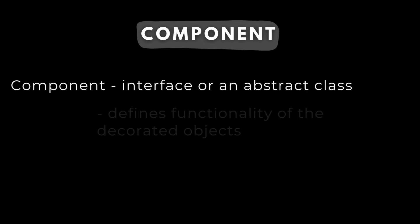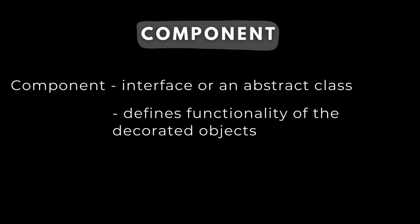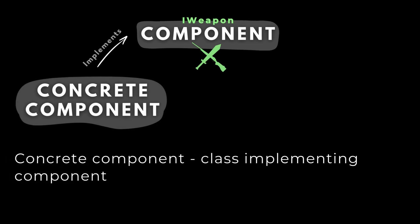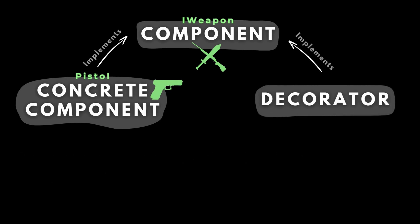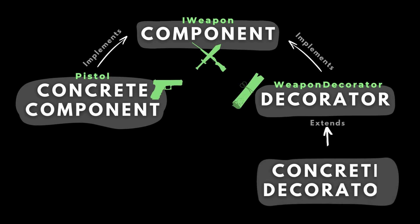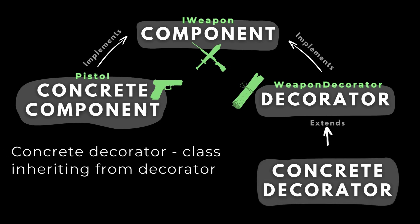The first element is the Component, which will be an interface or an abstract class defining functionality of the object you want to decorate — in our case, IWeapon. Then we have the Concrete Components, which are classes inheriting from the Component, such as Pistol, Rifle, Shotgun, and so on. Then we have the Decorator, often called Wrapper, which is the abstract class defining what the decorators must do — in our case, a simple WeaponDecorator. Then we have the Concrete Decorators: ScopeDecorator, SilencerDecorator, LaserDecorator, and so on.